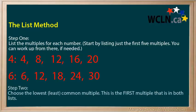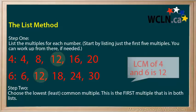The second step is to choose the lowest or least common multiple. This is the first multiple that is in both lists. The first number that they have in common is 12. So we say that the lowest common multiple of 4 and 6 is 12.